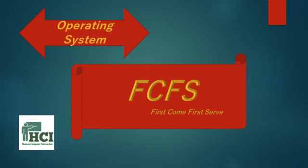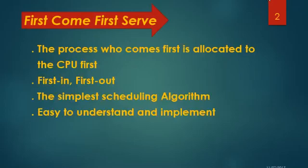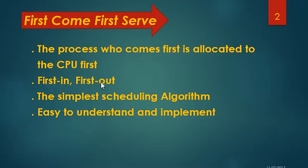In this lecture, we are going to discuss the First Come First Serve scheduling algorithm, which is basically the easiest and most basic CPU scheduling algorithm. The process which comes first is allocated to the CPU first — First In, First Out. The First Come First Serve scheduling algorithm works on the criteria of First In, First Out. It is the simplest scheduling algorithm and very easy to understand and implement.